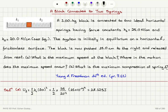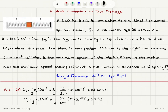The potential energy stored in the second spring will be one half k2 delta x2 squared. k2 was 20 newtons per centimeter, so it's 20 divided by 10 to the minus 2 meters, and the change in length is the same 15 centimeters, so it's 15 times 10 to the minus 2 squared. The potential energy stored in the second spring is 22.5 joules.